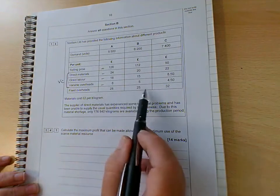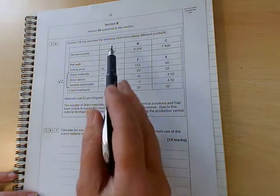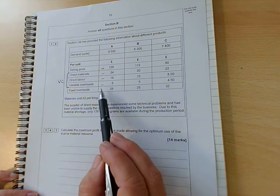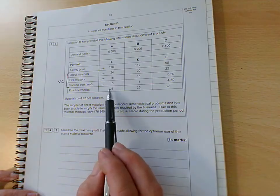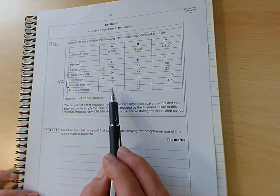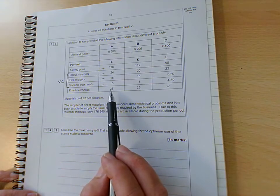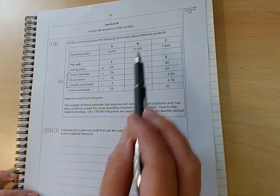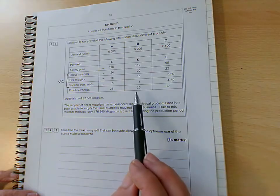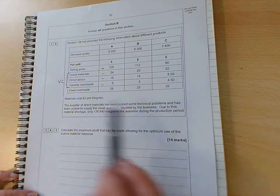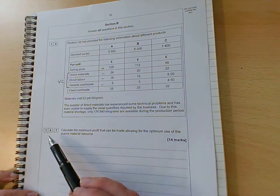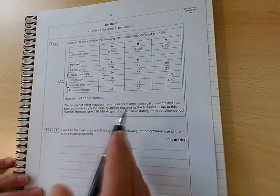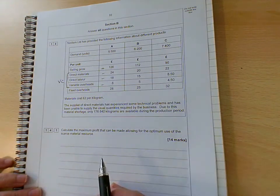And then the fixed overheads, we can work out how much the fixed overheads are because remember back to absorption costing, if we're doing it on a per unit basis, if we're saying that for product A the fixed overheads are £28 a unit, we can find the total amount of overheads, the budgeted overheads, by multiplying 28 by £5,500. We could do the same for B, £6,200 by £25 will give us the total overheads for B, same for C, and add them all together, that gives us the total overheads or the fixed cost, so we could then develop the question further. So if we need to find that figure, that's how we're going to get it.